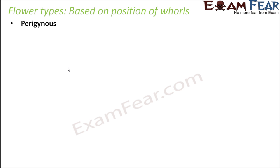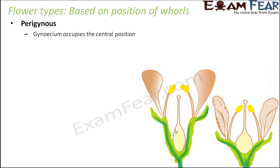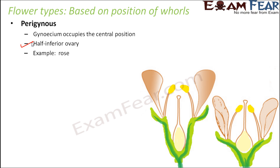The third type is perigynous, where the gynoecium occupies the central position — the ovary is neither superior nor inferior. The ovary is not at the bottom and not at the top, so it is called a half inferior ovary. It is not completely inferior but at the same time not superior either. An example of such a plant is rose. So whether the ovary is below all other whorls, above all other whorls, or at the central position — these are the three types: hypogynous, epigynous, and perigynous.